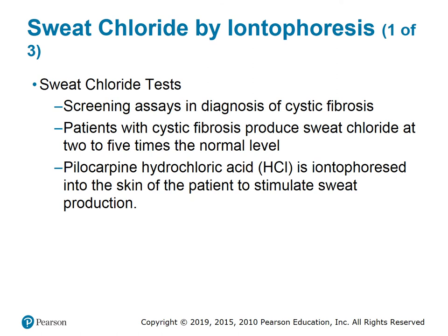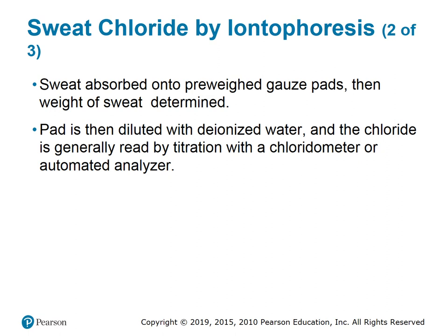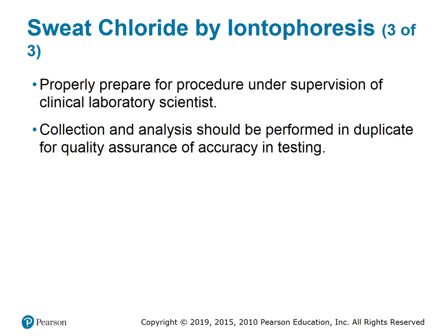The sweat chloride test by iontophoresis is used for screening and diagnosis of cystic fibrosis. Patients with cystic fibrosis produce sweat chloride at two to five times the normal level. Pilocarpine hydrochloride (HCl) is iontophoretically introduced into the skin to stimulate sweat production. Sweat is absorbed onto pre-weighed gauze pads and the weight of sweat is determined. The pad is then diluted with deionized water and chloride is read by titration with a chloridometer or automated analyzer. Collection and analysis should be performed in duplicate for quality assurance.